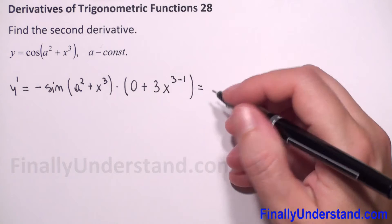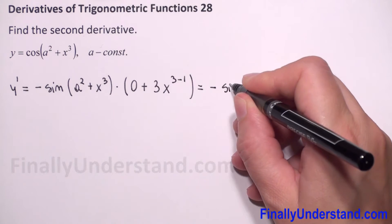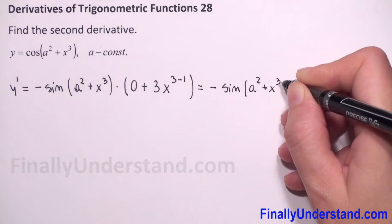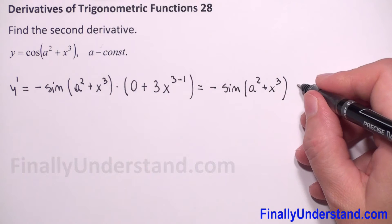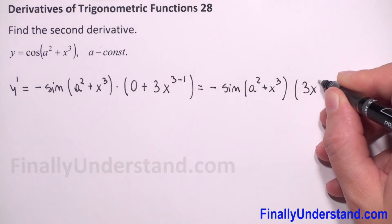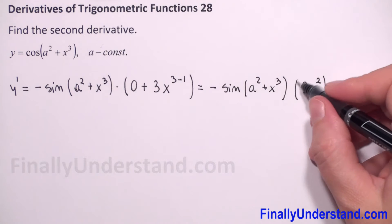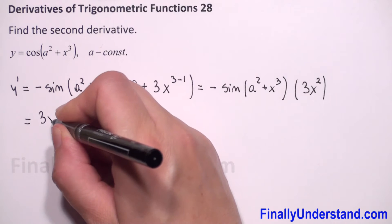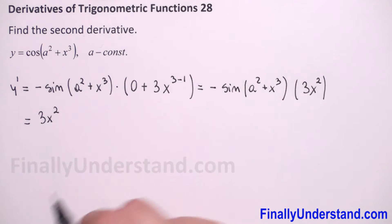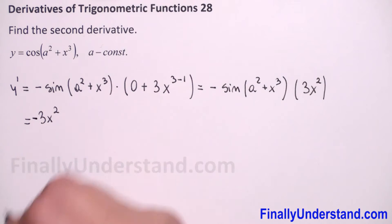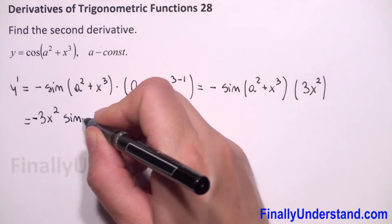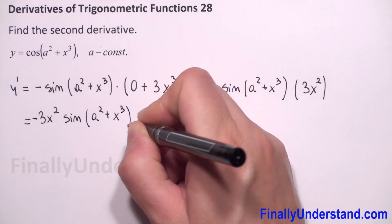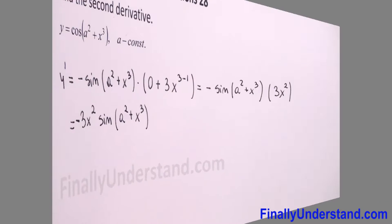So this equals negative sine of (a squared plus x to the third) times 3x squared. We can rewrite this by placing the 3x squared first, giving us negative 3x squared times sine of (a squared plus x to the third power). This is our first derivative.